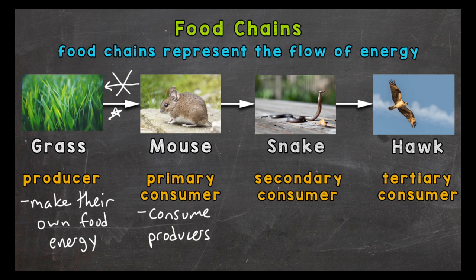Then the flow of energy will go to a secondary consumer. In our example, the mouse is being consumed by a snake. The snake is getting its energy from the mouse, which got its energy from the grass, which got its energy from the Sun.